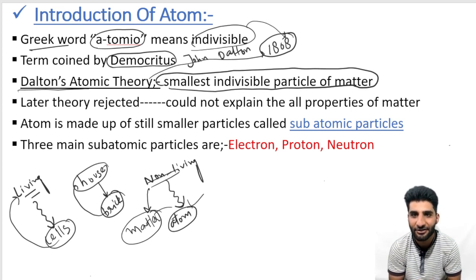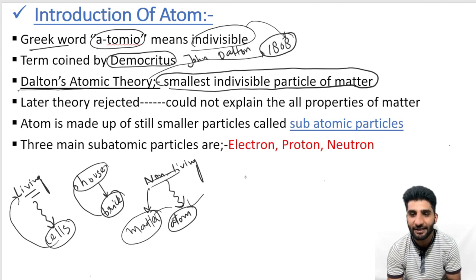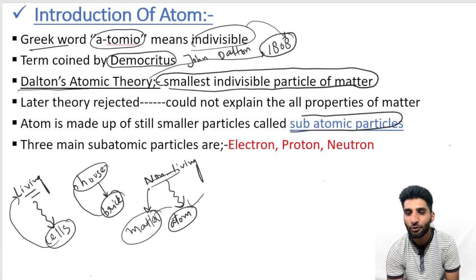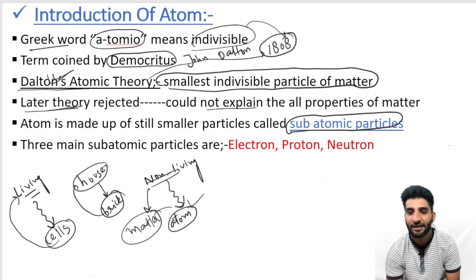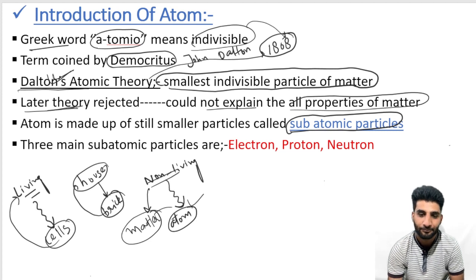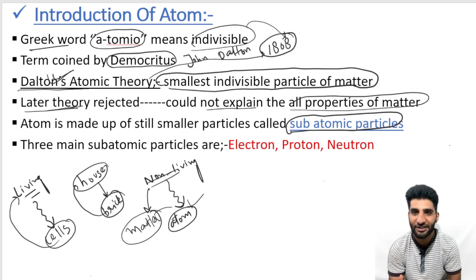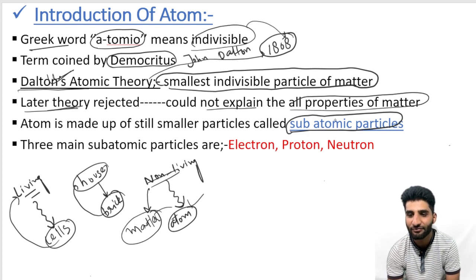Then, with further research, experiments, and observations, it was discovered that the atom is not actually the smallest particle. Atoms are further made up of smaller particles which we call sub-atomic particles, also called fundamental particles. Different observations and experiments rejected Dalton's theory because it could not explain different properties. So initially the atom was considered indivisible, but with advancement in science and technology it was found to be made up of smaller particles called sub-atomic or fundamental particles.